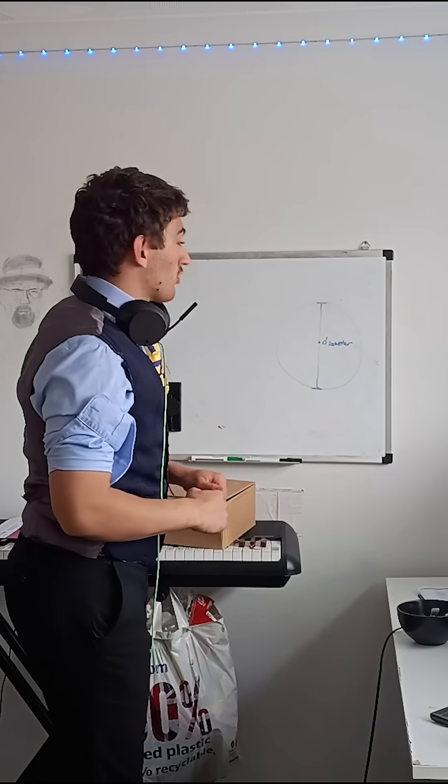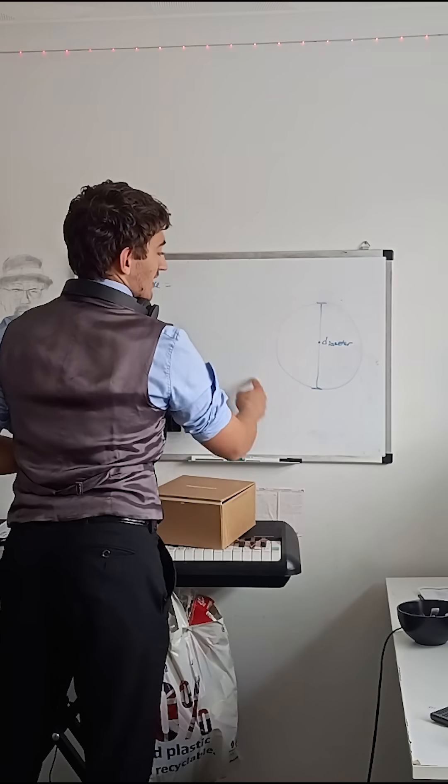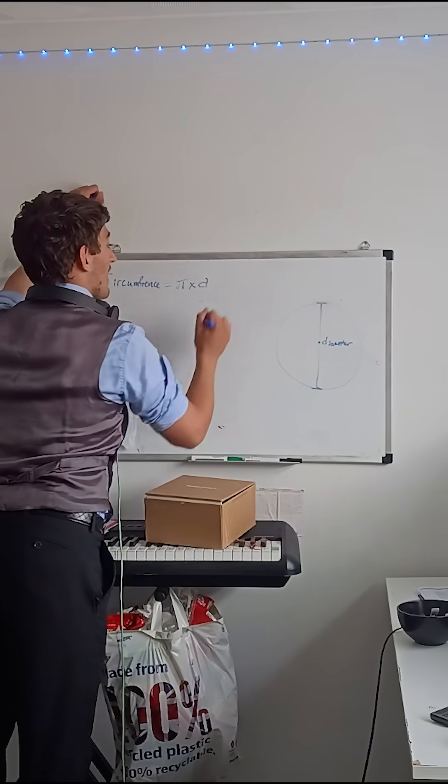The circumference of the circle, which means just the outside of the circle, is pi times the diameter.